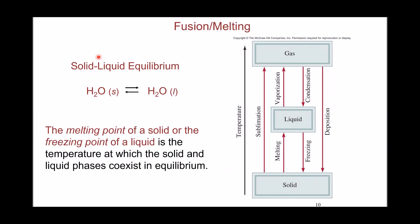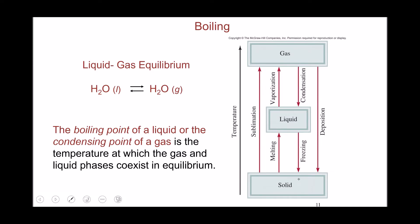The equilibrium between solid and liquid is accompanied by two processes depending on direction: melting, going from solid to liquid, and freezing, the opposite. The melting point and freezing point are the same temperature — the temperature at which this exchange takes place. The same amount of energy needed to melt a substance is the same amount released when you freeze that substance from liquid to solid phase.